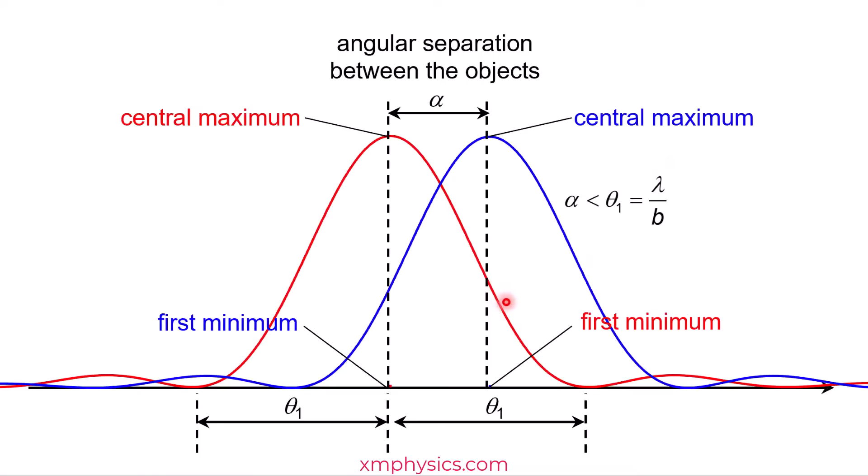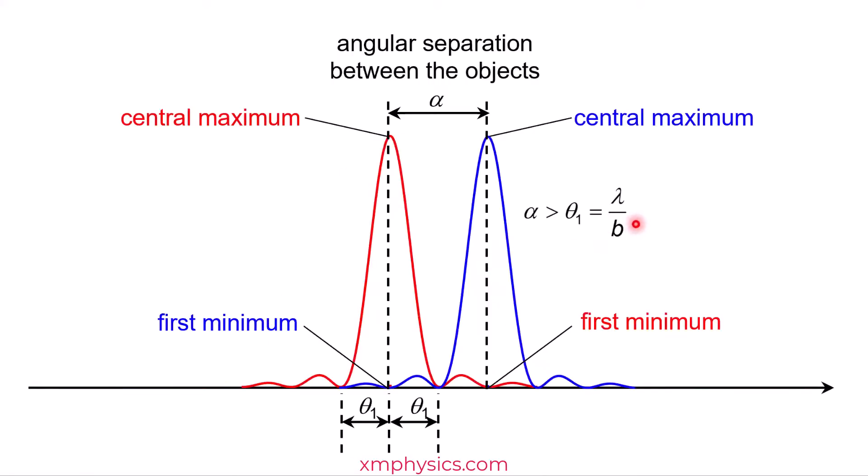For example, this one here is when your slit width is too small, resulting in a large first minimum angle. So the spread is too big, and these two images are not resolvable. So what you can do is to have a larger slit width so that the first minimum angle becomes smaller. So see, the spread is now smaller, and therefore the two images can be resolved.